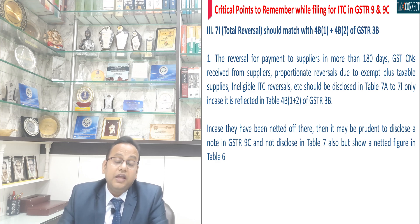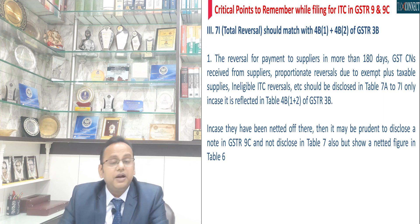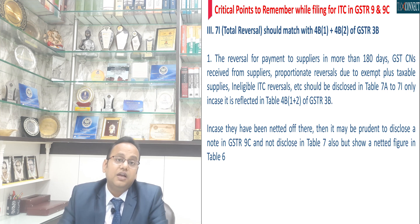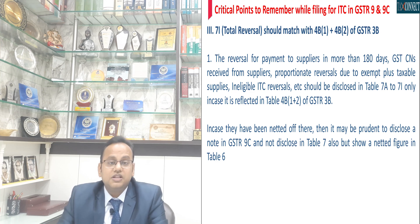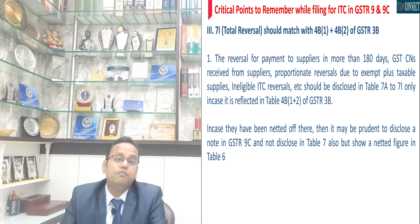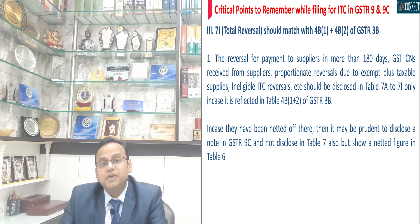In that case, do not report it in table 7; instead report it as a netted-off figure in table 6 of GSTR 9 itself. Because the moment your table 7I is more than 4B of GSTR 3B, it may lead to the generation of a notice.